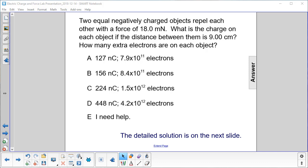Two equal negatively charged objects repel each other with a force of 18 millinewtons. What is the charge on each object if the distance between them is 9 centimeters? How many extra electrons are on each object?